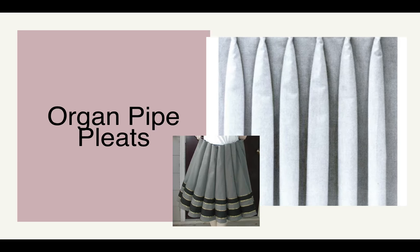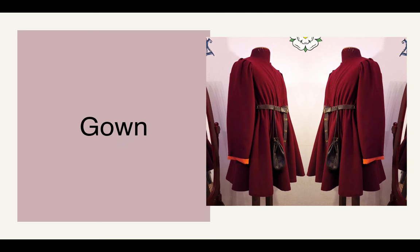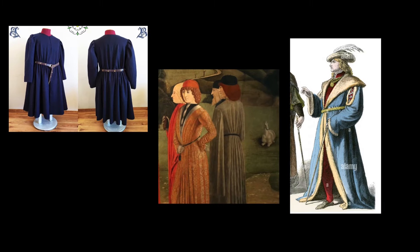Organ pipe pleats are very round and vertical, emulating the shape of organ pipes. Houppelandes become more indistinguishable in shape and began to look more like a generic robe. They would sometimes have full organ pipe pleats coming from the shoulders and could be worn in all lengths. However, if they were long, they would be referred to as a gown.